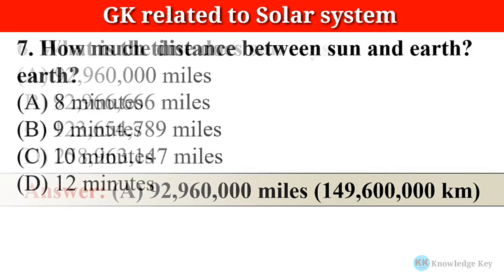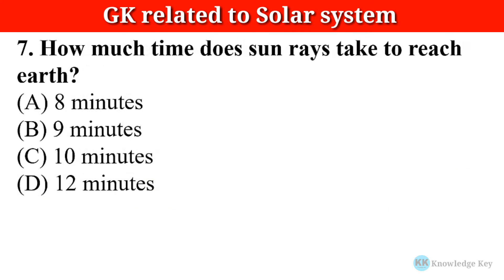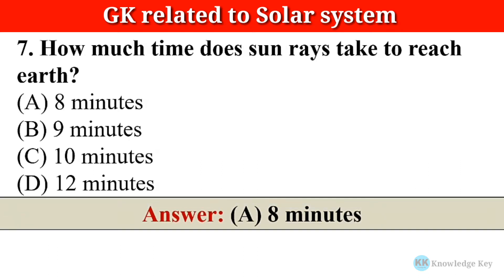Question number seven: How much time do Sun rays take to reach Earth? The correct answer is option A — 8 minutes.